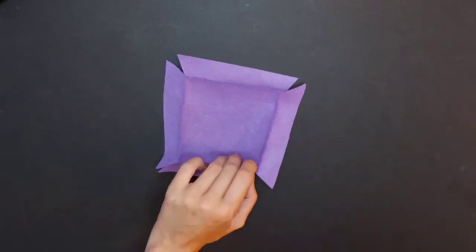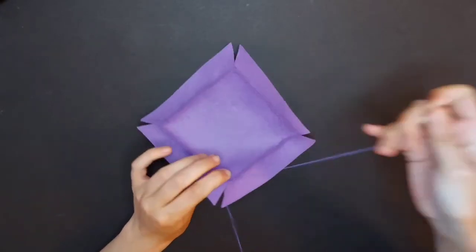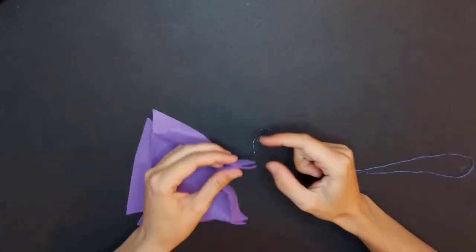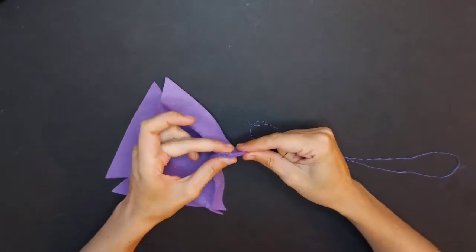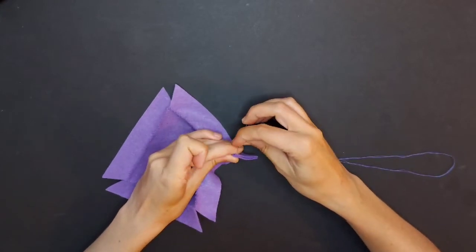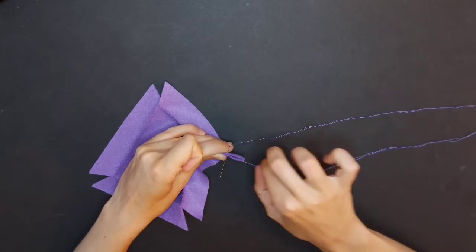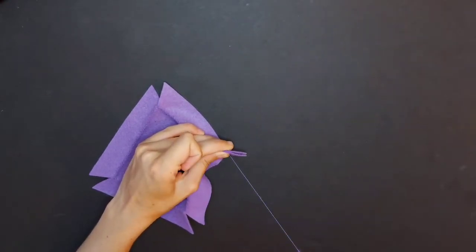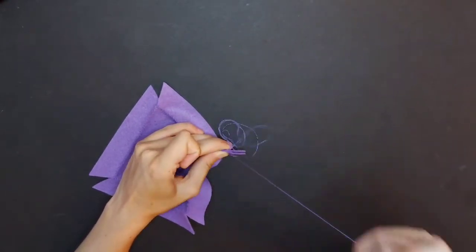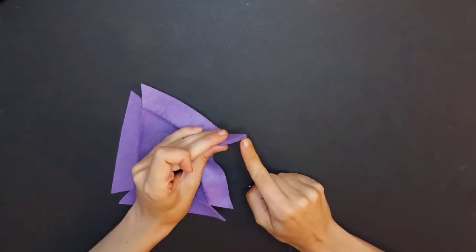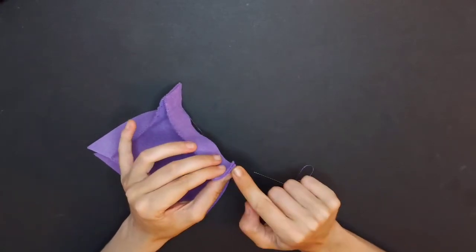And again, just whip stitch all of the corners and tie off at the end. See, if I used a double layer on this, then I'd be able to hide my stitches on the inside too. So that is another bonus of doubling up.